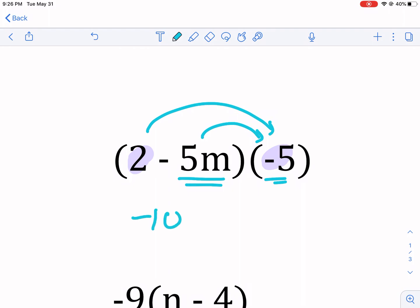So we have 2 times negative 5 that gives us negative 10, and the negative 5m times negative 5 that gives us positive 25m, and that is our answer.